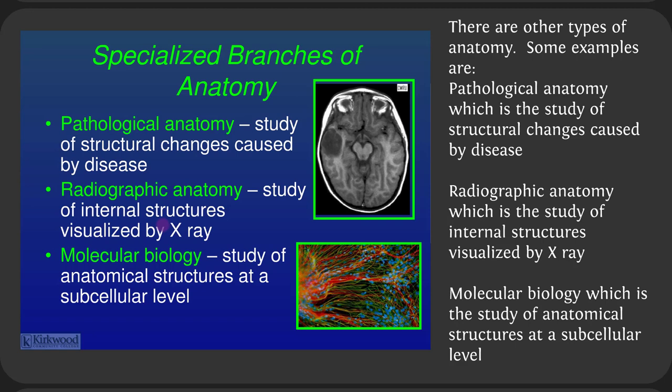There are other types of anatomy. Pathological anatomy is the study of structural changes caused by disease. Radiographic anatomy, relevant for radiology techs, is the study of internal structures visualized by any imaging device — not necessarily x-rays, but also MRI, PET scans, or CAT scans. Molecular biology is the study of anatomical structures at a subcellular level.